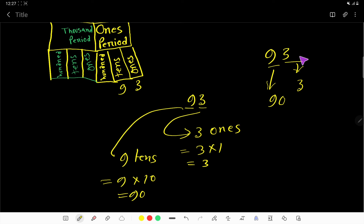So 90 and 3. 3 is the place value of 3, and 90 is the place value of 9.